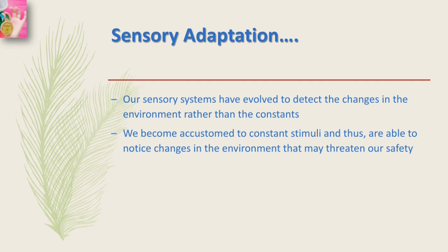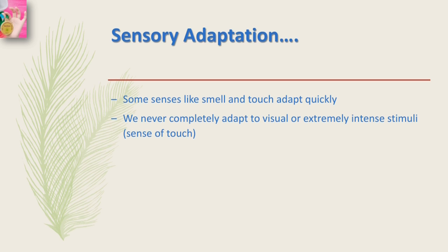Some senses like smell and touch adapt quickly, but we never completely adapt to visual or extremely intense stimuli, like the heat of the sun or a burn on our hand. From an evolutionary perspective, these exceptions to sensory adaptation aid in survival, as they remind us to avoid extreme heat and to do something about a burn on the hand.